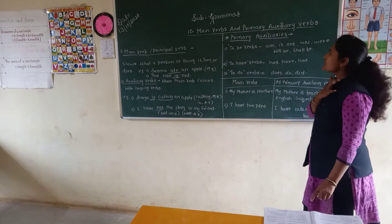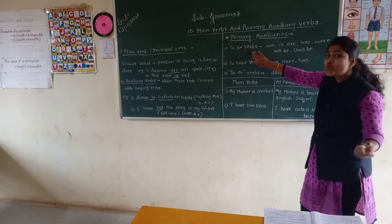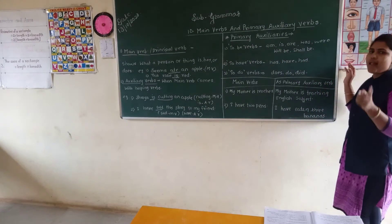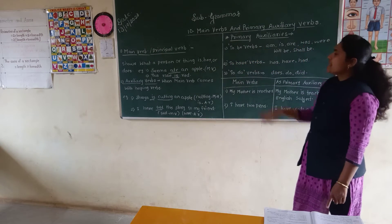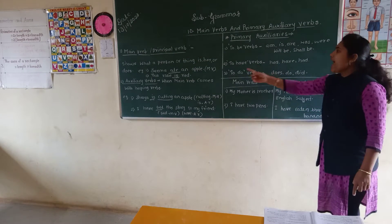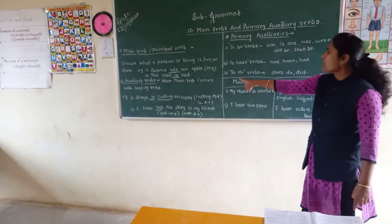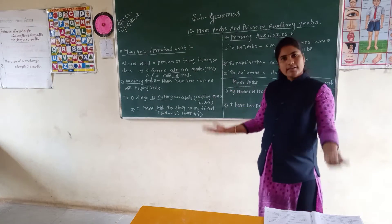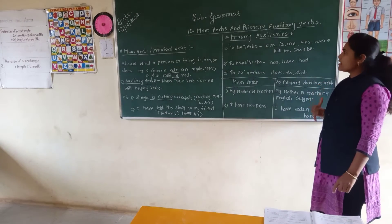Now, which are the primary auxiliaries? The 'to be' form includes: is, am, are, was, were, shall be, will be. The 'to have' form includes: has, have, had. And the third one, the 'to do' form, includes: do, does, did. These verbs are called the primary auxiliaries.